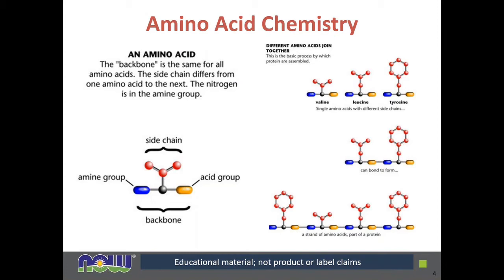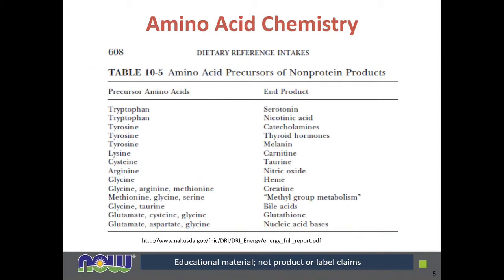Let's talk about some basics of amino acids. The backbone is the same for all amino acids, while the side chain differs from one amino acid to the next. Nitrogen is always part of the amino acid and the protein group. You can see in the lower left-hand corner the amine group and the acid group represented by blue and yellow, while the side chain can vary. Various shapes of different amino acids give a better pictorial representation of how you can put these building blocks together and how our body does that too.